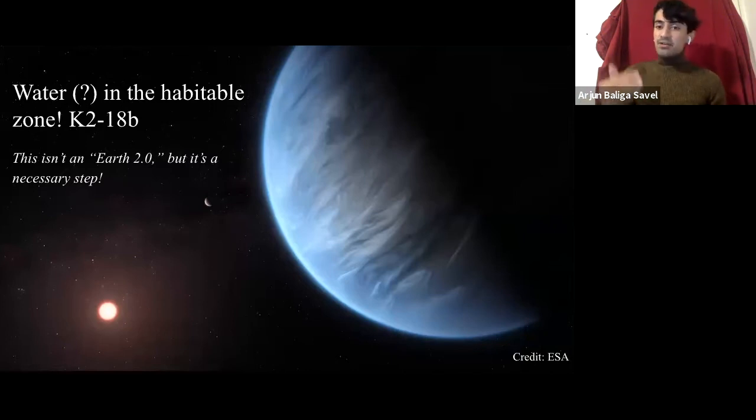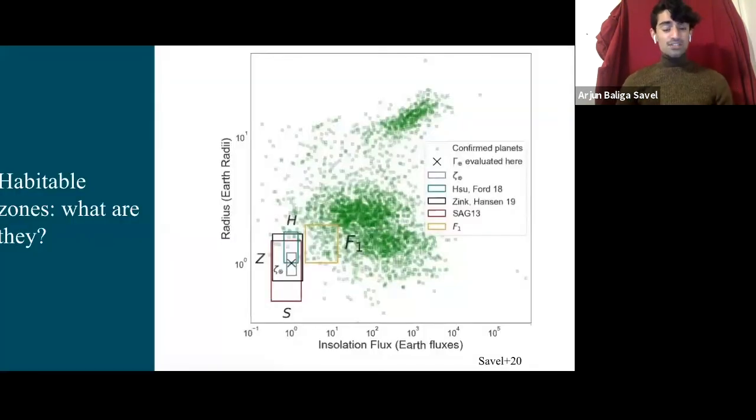So at the very least, the example of K2 18b is a prime example of science being this ever-evolving conversation, especially when it comes to the most exciting claims like water in the habitable zone. And at best, it's a very clear milestone in the efforts to find an Earth 2.0. Because for many people in the community, one of the most interesting aspects of exoplanets is to be able to say that might be something very much like the Earth from a size standpoint, from a mass standpoint, and as interesting as today, an atmospheric standpoint.